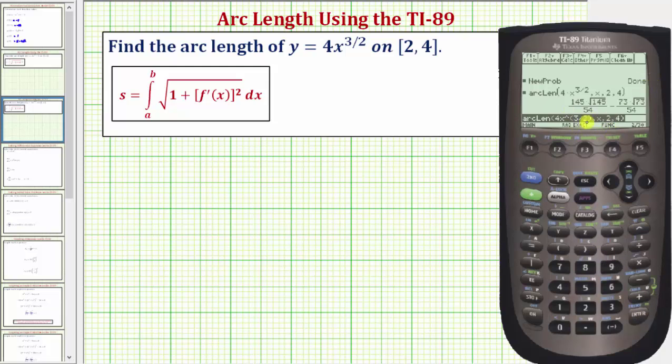Now the calculator is in exact mode, so this would be the exact arc length of this function over the closed interval from 2 to 4. To get the decimal approximation we would press diamond enter. This is how we quickly determine arc length from the home screen using the TI-89 graphing calculator.